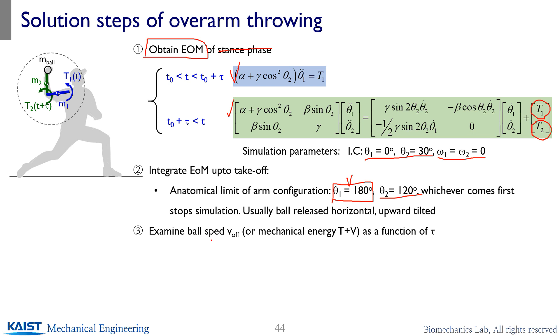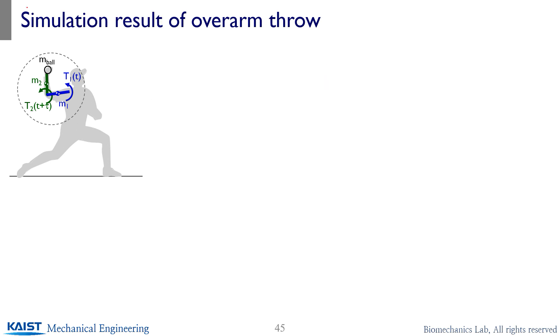And what we observed is the ball speed. What is the release speed of the ball as a function of tau? So if there is any optimal tau exists, that actually validates our hypothesis. So interpret the result in terms of validation of hypothesis. And also you can do the parameter study to examine your applied assumption is still valid and doesn't change your main claim of your study.